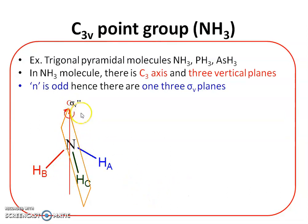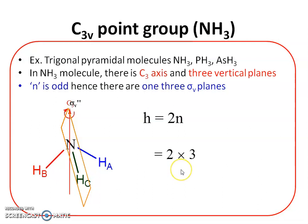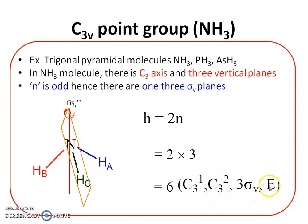So ammonia has one C3 principal axis and three vertical planes — sigma V, sigma V prime, and sigma V double prime — and therefore belongs to the C3V point group. The order of the group is H = 2N = 2 × 3 = 6. The six symmetry elements are C3¹, C3², C3³ (= identity), sigma V, sigma V prime, and sigma V double prime. This completes the discussion of three examples of CNV point groups.